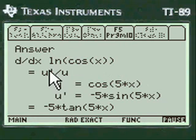And you notice here's the formula u prime over u. U is whatever is inside the parentheses of the log natural log. And so we have cosine of 5x. The derivative of cosine of 5x is minus 5 sine of 5x.